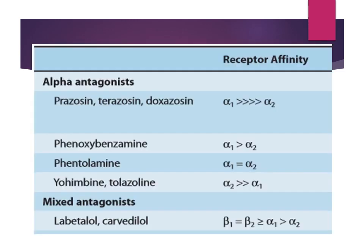I will tell you the relative selectivity. For alpha 1 selective drugs like prazosin, terazosin, and doxazosin, how many times more selective are they for alpha 1 as compared to alpha 2? Phenoxybenzamine has a little selectivity for alpha 1 over alpha 2, so we consider it non-selective. Phentolamine has equal selectivity.